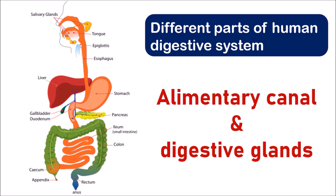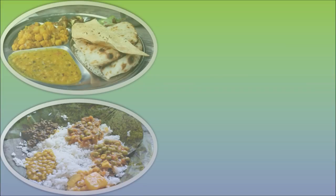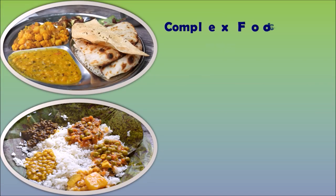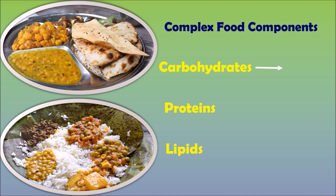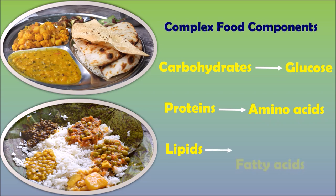Now let us learn how it works and why the food has to be digested. The food we take contains complex components such as carbohydrates, proteins, and lipids. These complex substances cannot be directly assimilated at the tissue level, hence they must be digested. Carbohydrates are digested to form glucose, proteins are digested to form amino acids, and lipids are digested to form fatty acids and glycerol.